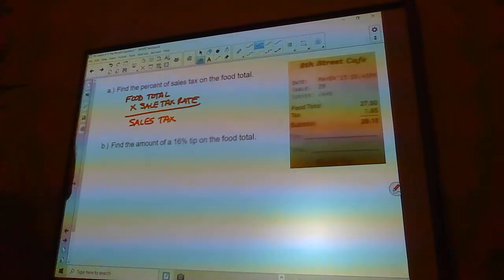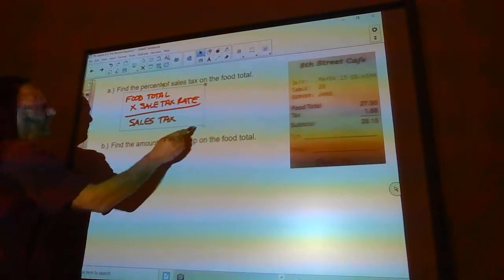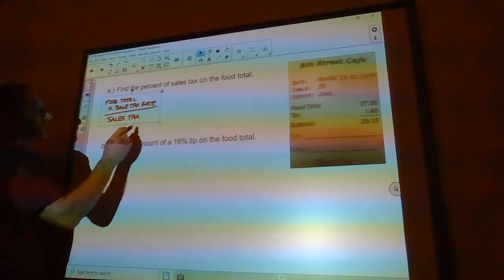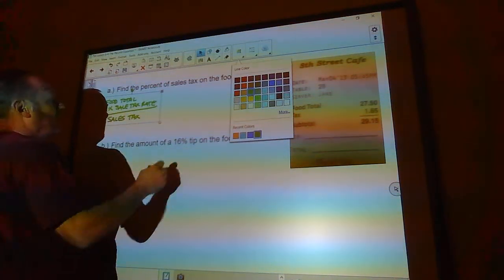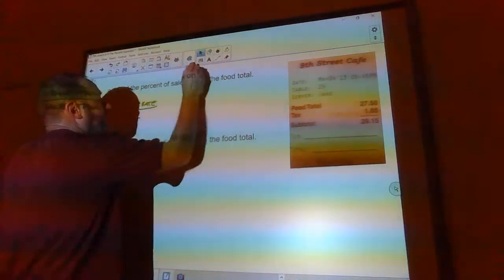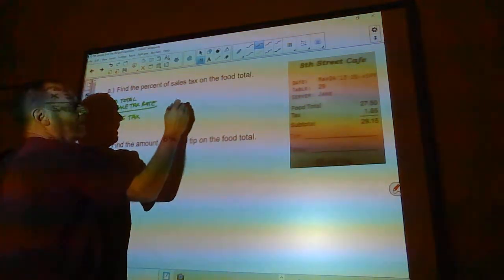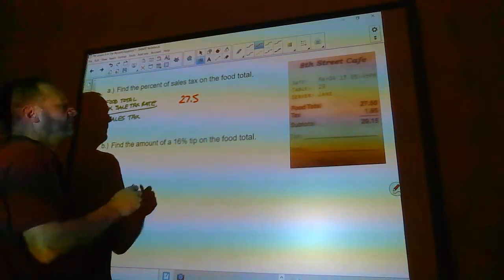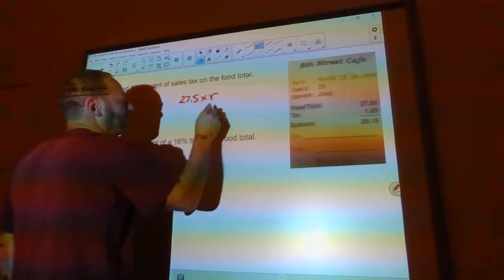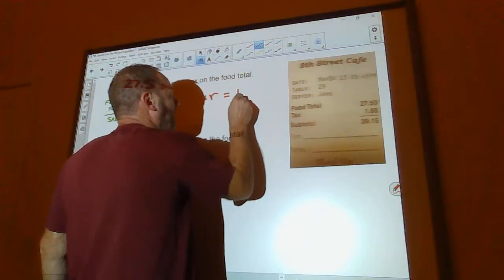Okay, so if we keep that in mind here, then, okay, so 27 - whoops. I changed my color. Okay, so 27.5 is the food total times the rate would equal $1.65. That's what my tax is.